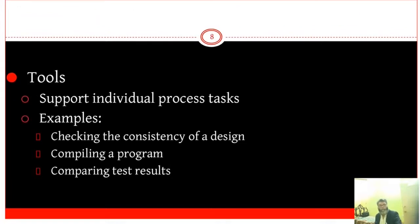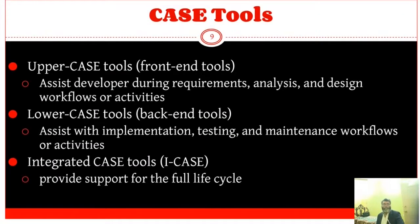First, tools. It supports individual process tasks — for example, checking the consistency of a design, compiling a program, and comparison of test results. There are three types. Uppercase tools, like front-end tools, assist the developer during development, analysis and design workflows or activities.